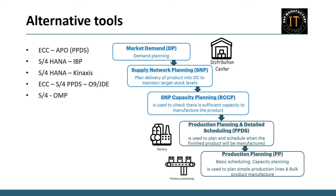Integration of S/4 HANA with Kinaxis: Kinaxis performs both demand planning and supply network planning, similar to IBP. Kinaxis doesn't directly create plan orders but provides essential details for their creation in S/4. This tool sees widespread usage in the European region.